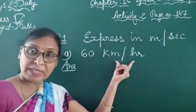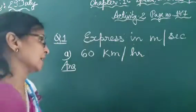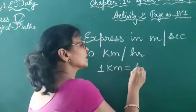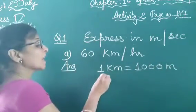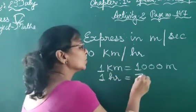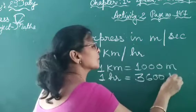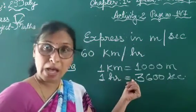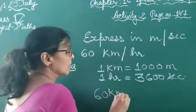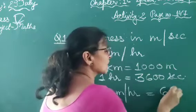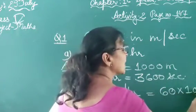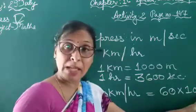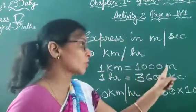Here kilometer per hour is given and you express in meter per second. So children, first you remember this: 1 kilometer equals 1000 meters and 1 hour equals 3600 seconds. Hour is converted into seconds. Now 60 kilometer per hour equals 60 multiplied by 1000 meters. Kilometer is converted into meters, so we multiply by 1000. We know that 1 kilometer equals 1000 meters.